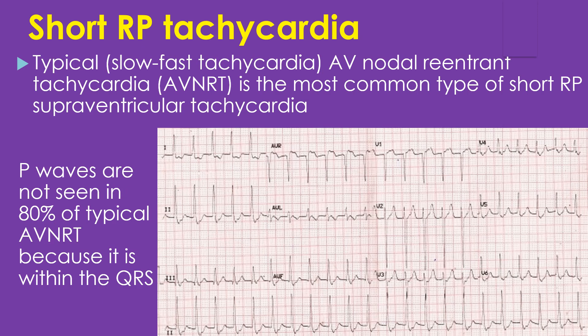Typical slow-fast AV nodal reentrant tachycardia is the most common type of short RP supraventricular tachycardia. It is called slow-fast tachycardia in which the impulse travels downwards through the slow pathway and back through the fast pathway. P waves are not seen in 80% of typical AVNRT because they are within the QRS; in 20% they are visible just after the QRS.